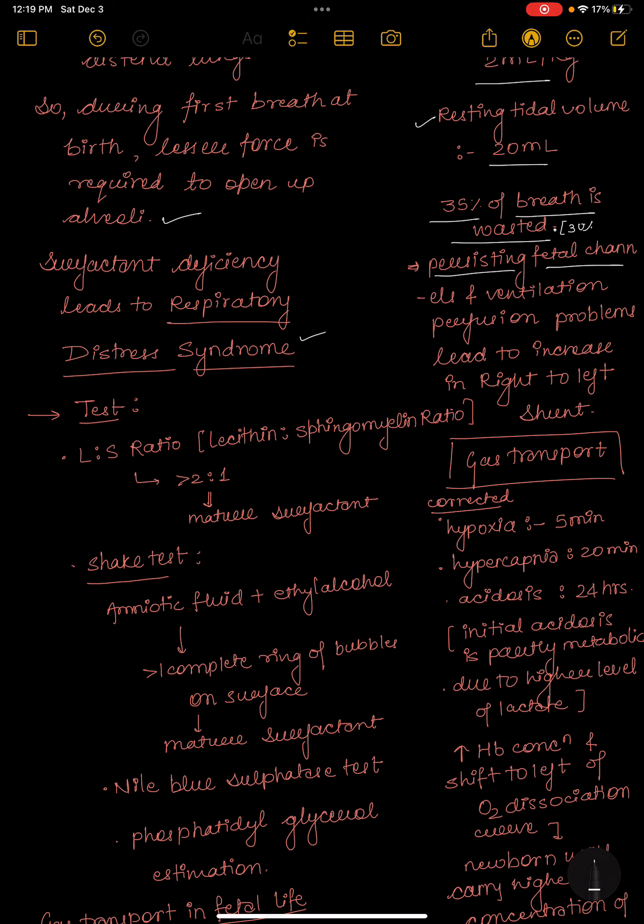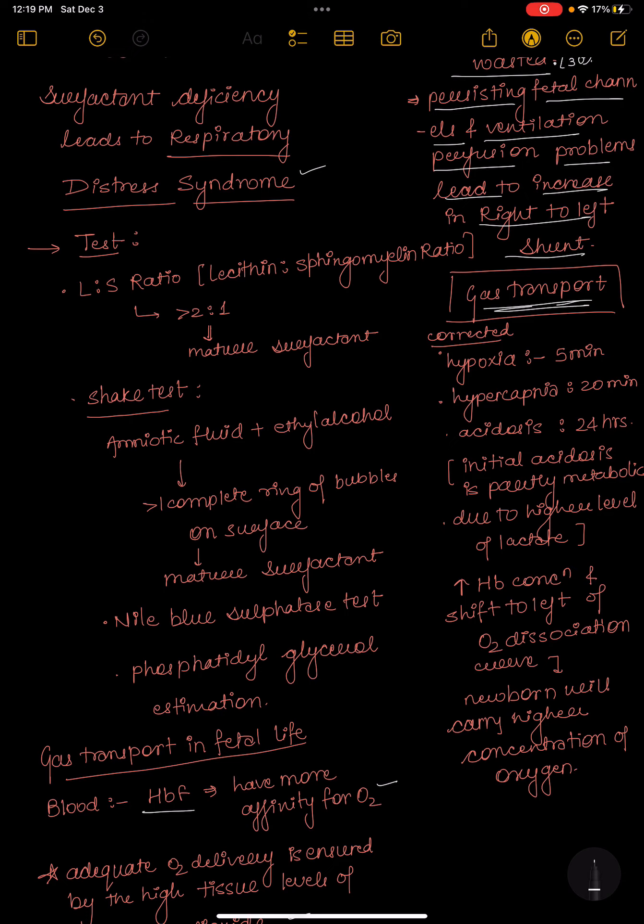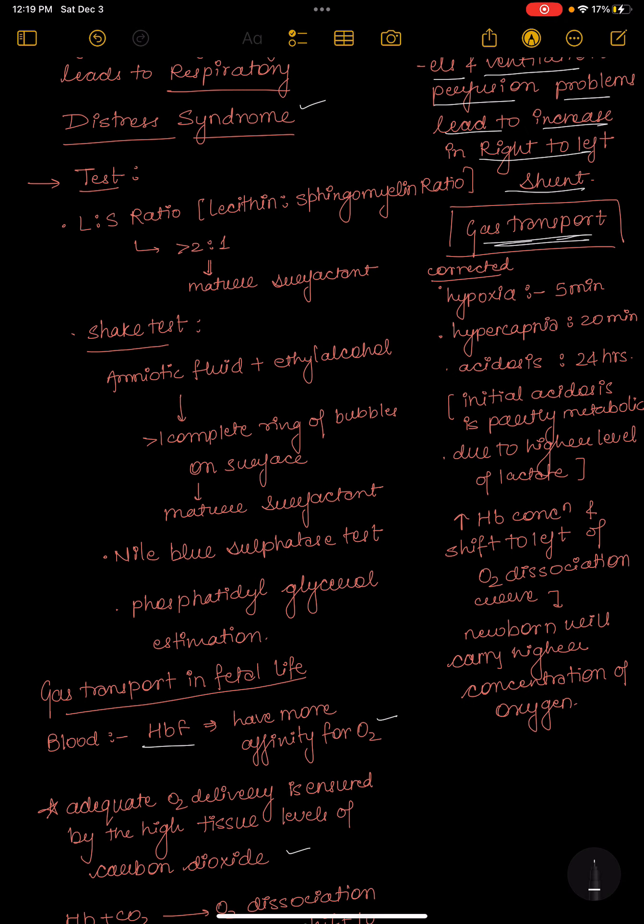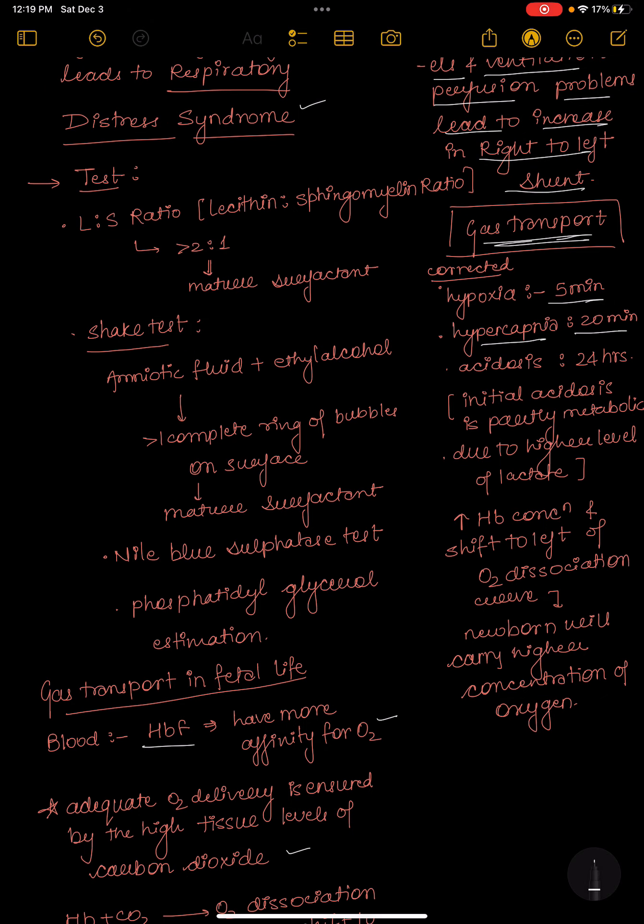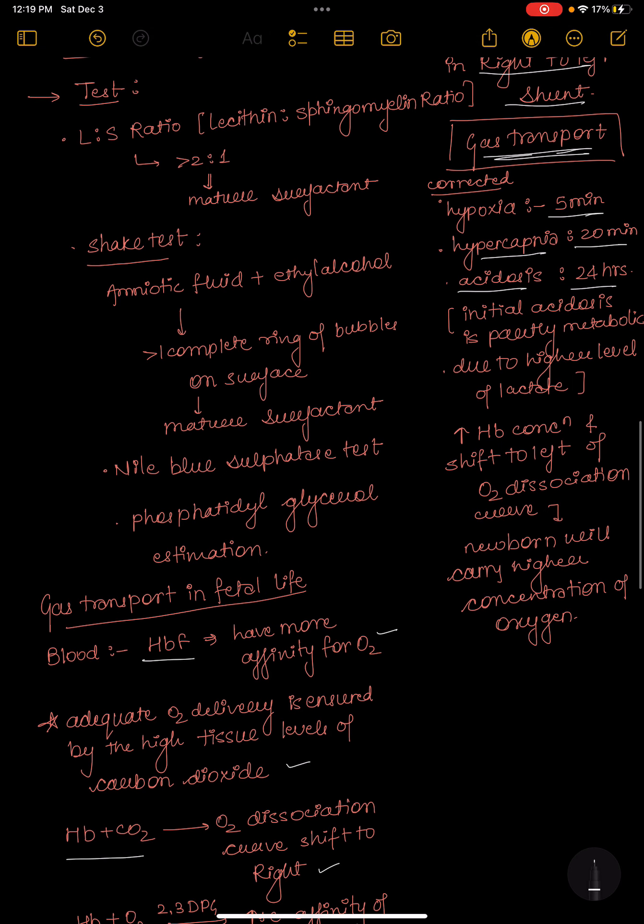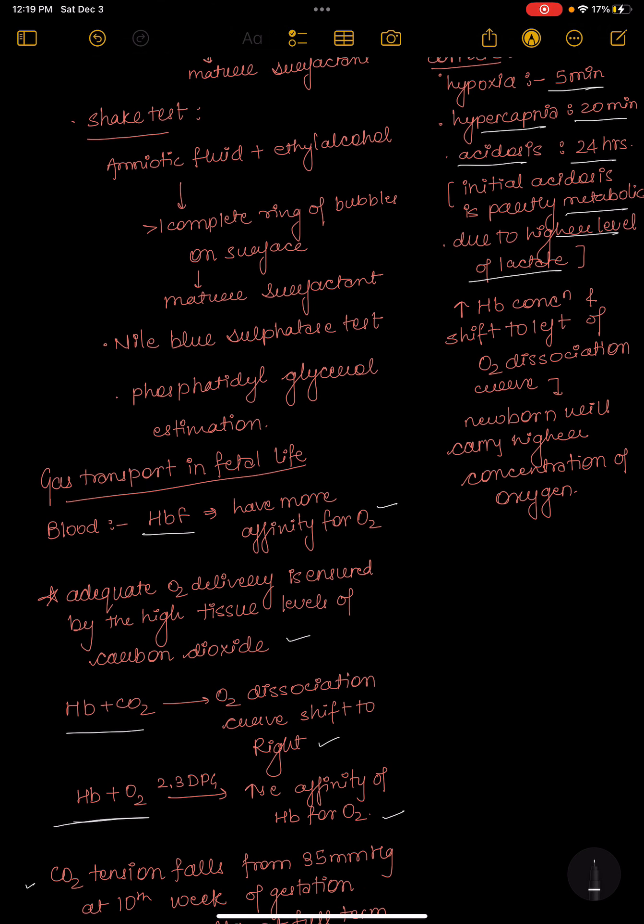Persisting fetal channels and ventilation-perfusion problems lead to increase in right to left shunt. Gas transport: hypoxia is corrected in 5 minutes, hypercapnia is corrected in 20 minutes, acidosis is corrected in 24 hours. Initially acidosis is due to higher level of lactates due to increased metabolism. Increased hemoglobin concentration and shift to left of oxygen dissociation curve is responsible for higher concentration of oxygen carrying in blood.